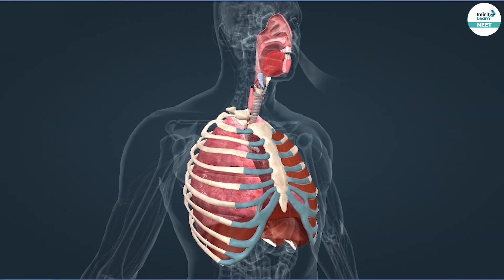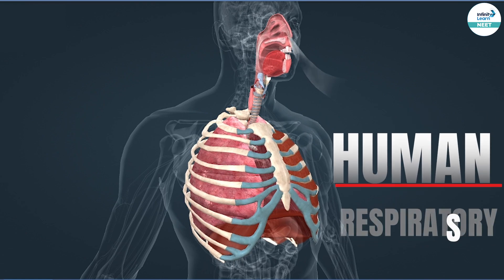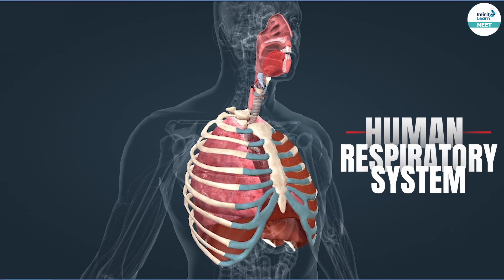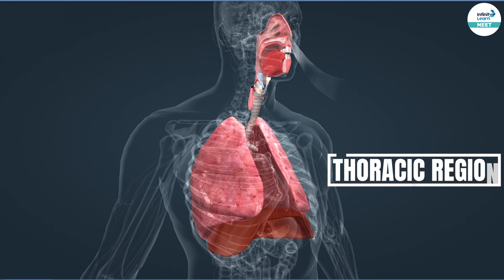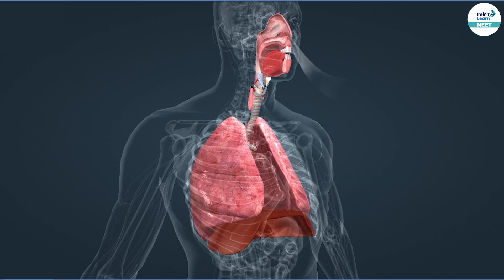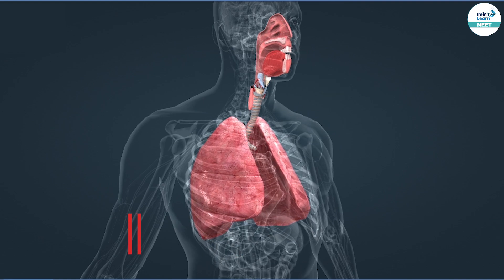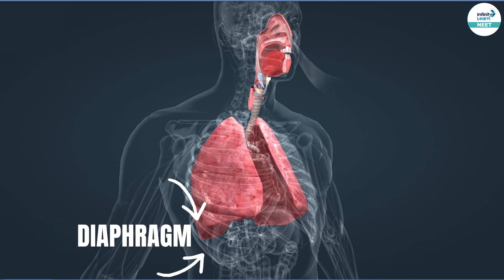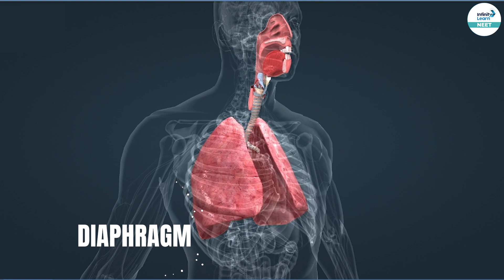Alright, so in the screen in front of you, you can see the human respiratory system. Now, the part that is highlighted is the thoracic region which is majorly involved in respiration when it comes to human beings. Now, the part that is being highlighted is the dome-shaped muscle which is known as the diaphragm, present below the thoracic region, and it also protects the respiratory system in a certain way.